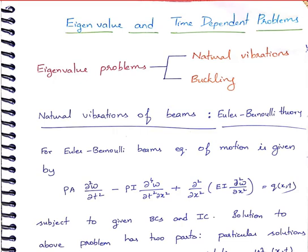Until now, we have seen how to solve one-dimensional steady-state analysis problems in 1D. We have looked at problems with one primary variable dealing with second-order differential equations, problems with two primary variables with a single fourth-order differential equation, and finally a problem with two governing equations and two primary variables. All of these problems belong to the category of steady-state analysis, where a governing differential equation must be satisfied in the domain and boundary conditions on the boundary.